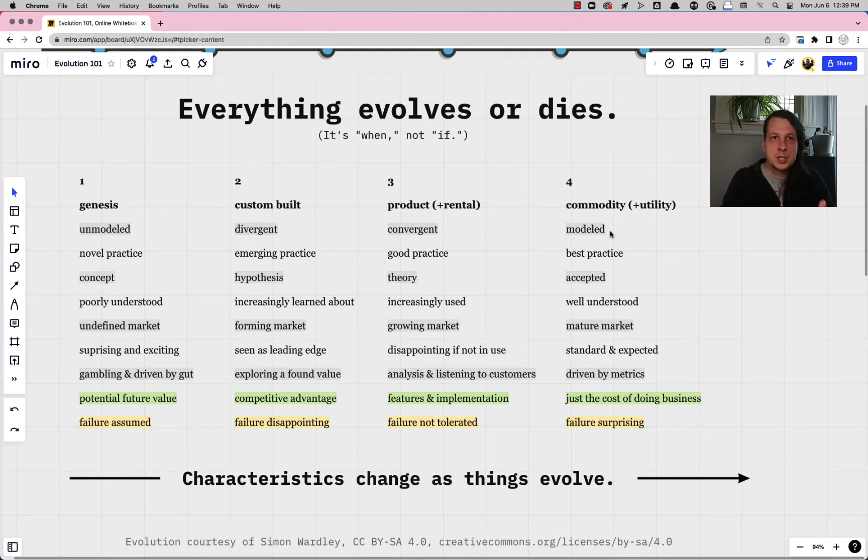And over time if those things stick around there's a bet that we can make which is basically that as long as there's benefit to be gotten by making something better someone out there will do it. And so there's this constant force and pressure to evolve or die. And so if the idea sticks around long enough eventually it'll end up in stage 4 where it's got the exact opposite qualities. Where it's totally well understood, it's just completely common and ubiquitous,